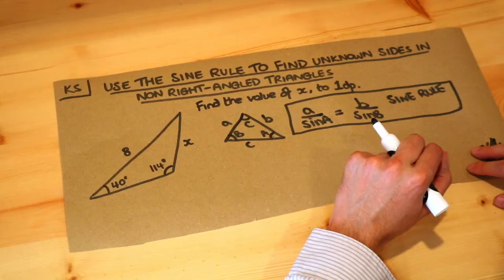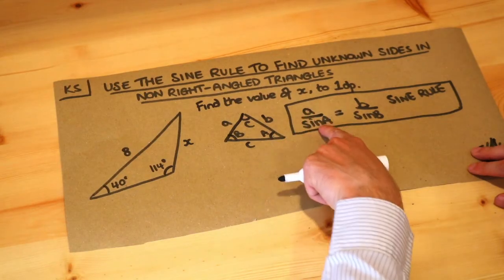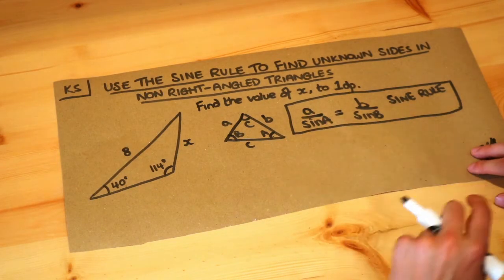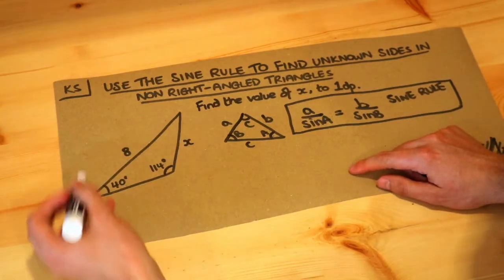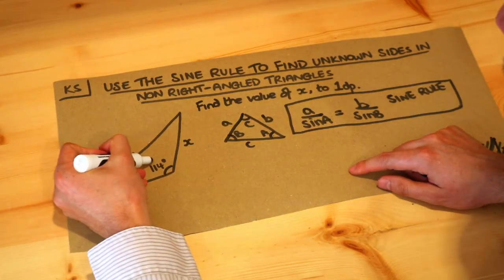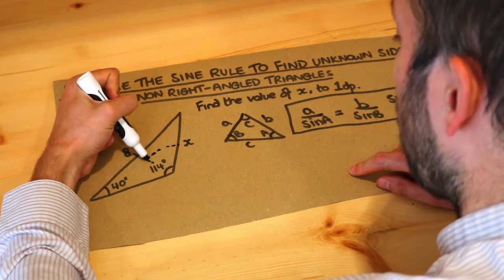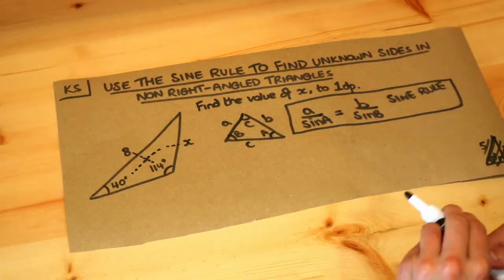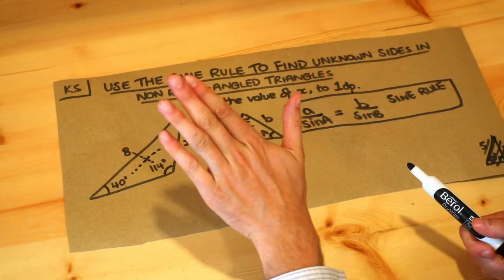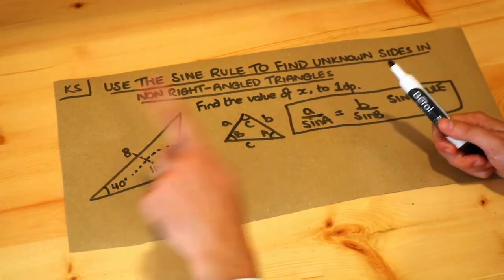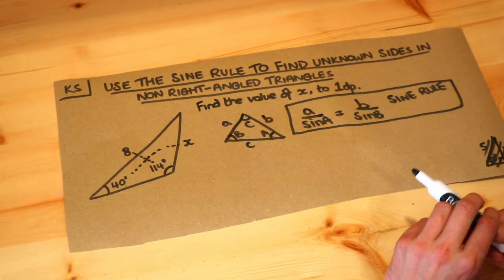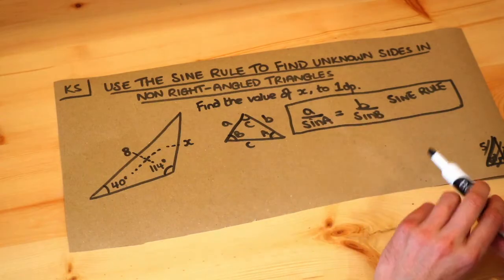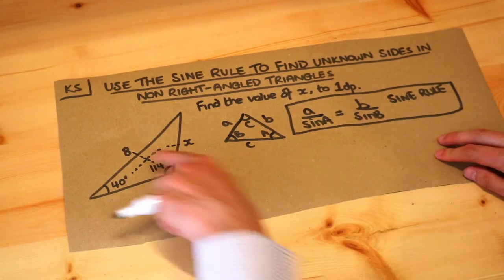We can use the sine rule when you have a side and an opposite angle pair. In this particular triangle, we've got a side and an opposite angle pair twice. So if you have two side-opposite angle pairs like we do here, that's when we can use the sine rule either to find an unknown side or an unknown angle.